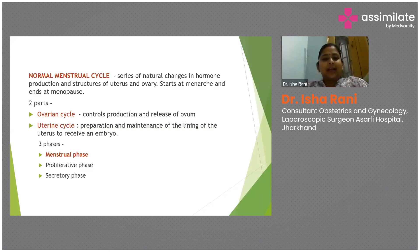The uterine cycle deals with preparation and maintenance of the lining of the uterus to receive an embryo. The uterine cycle has three phases: the menstrual phase, where the bleeding takes place; the proliferative phase; and the secretory phase.